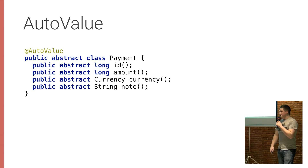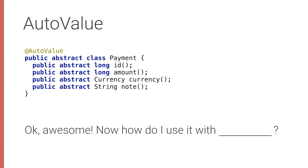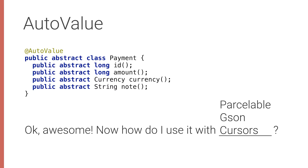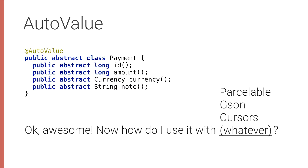When people start using AutoValue, they go: awesome — except, how do I use it with Parcelable? Or GSON? Or maybe Cursors? There are a million things you want to take this value type and apply to something that the library itself wasn't originally written for. And that's exactly what AutoValue extensions are for.